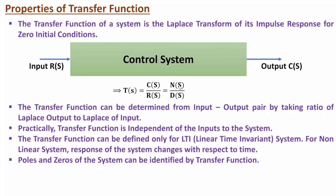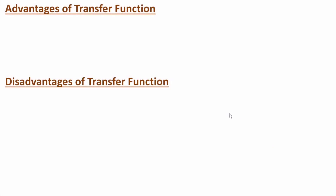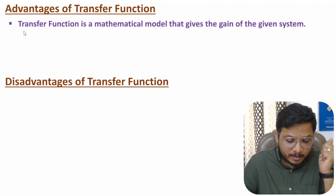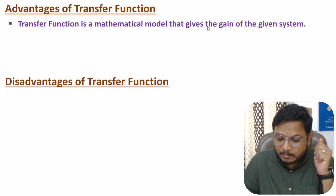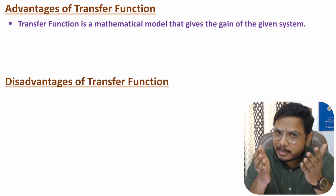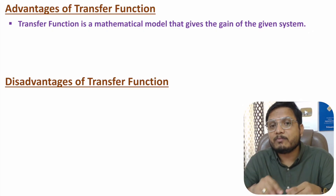The characteristics and stability of the system can be identified using the transfer function. In future videos I will explain many methods to understand characteristics and stability of the system based on transfer function. Transfer function is a mathematical model which gives the gain of the system — it is a ratio of output to input — and based on transfer function we can understand gain of the system with respect to frequency.